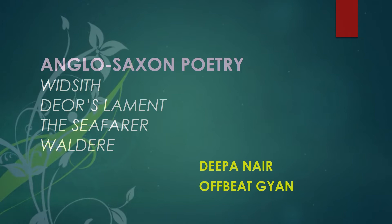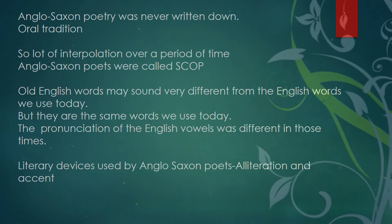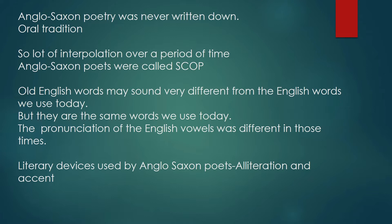Anglo-Saxon poetry was never written down — it had an oral tradition. Over a period of time, a lot of interpolation happened. Interpolation means that when a particular song or poem was transferred from one generation to the next, the poets added or tweaked — they added or deleted certain parts depending on their likes and dislikes. So over time the poem underwent many changes.